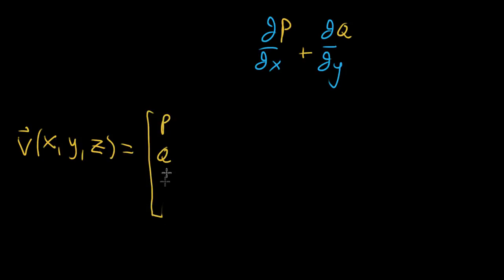So it might be like p, q, and r, and all of these are functions of x, y, and z. So that's p of x, y, and z, q of x, y, and z, and then r of x, y, and z.